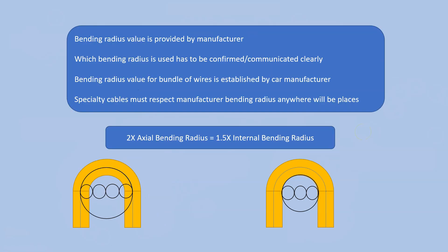This is the main answer: the bending radius value is provided by the manufacturer. It can only come from the cable manufacturer — not the supplier, vendor, or salesperson — because they know what materials they used, what the cable is designed for, and they have conducted all the tests. They will have a datasheet stating the maximum bending radius. The bending radius of a cable cannot be calculated by you — you need to find it from the manufacturer.